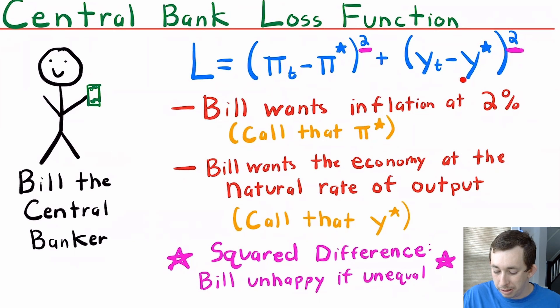Notice I've said the squared difference. That's because if inflation is too high, Bill gets sad. If inflation is too low, Bill also gets sad. If the output gap is too high, so we're in a boom, then this difference is positive and Bill is unhappy. If we are in a recession, then this output gap is below y*, and that squared difference becomes positive, so we also incur some loss.